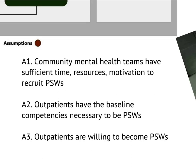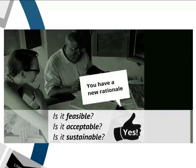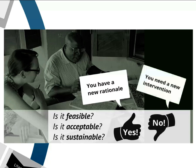The purpose of the formative research is to test those assumptions and to turn them into rationales. The overarching questions you're asking are: is the programme feasible? Is it acceptable? And is it sustainable? If you do your formative research and it says yes, you have a new rationale. If the answer is no, then you need to design a new intervention. To test the assumption that the community health team have time to recruit peer support workers, you might run a pilot.